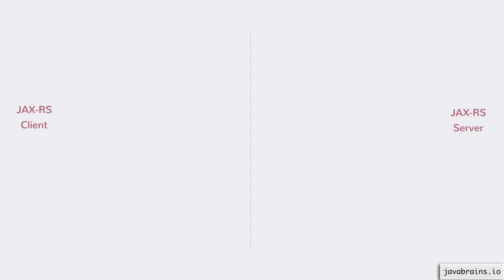If this is confusing, let me illustrate with a diagram. Let's say you have a client and a server, and the client makes a request. I'm going to highlight all the different elements that act. Now let's say you have a bunch of filters, interceptors, and message body readers and writers on the client, and also on the server. I'm going to cover the order in which they get called, and hopefully by the end of the slide you'll be clear about what happens.